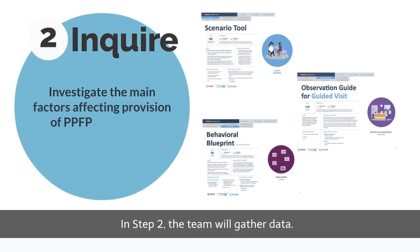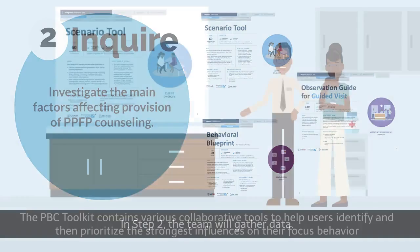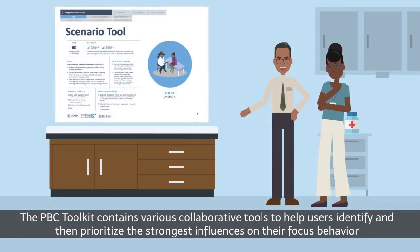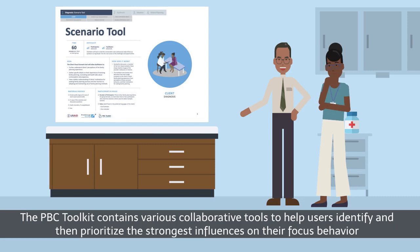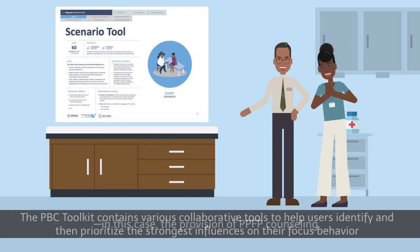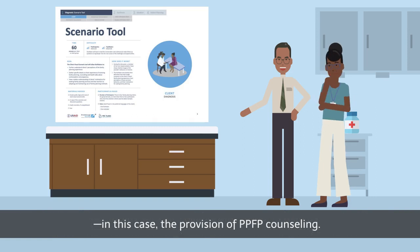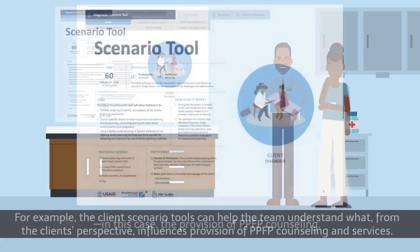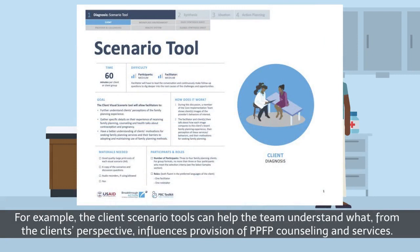In Step 2, the team will gather data. The PBC Toolkit contains various collaborative tools to help users identify and then prioritise the strongest influences on their focus behaviour — in this case, the provision of PPFP counselling. For example, the client scenario tools can help the team understand what, from the client's perspective, influences provision of PPFP counselling and services.